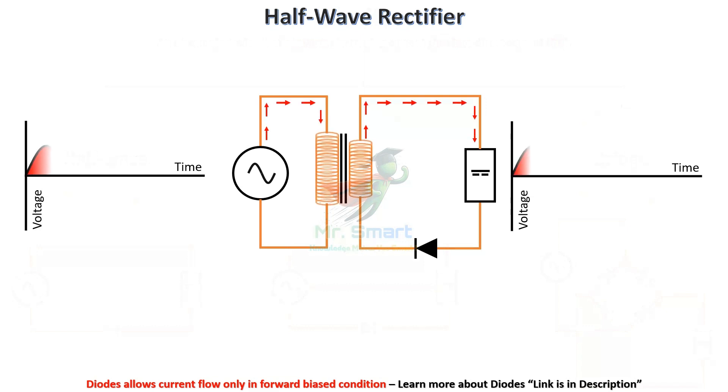A half-wave rectifier is made with a single diode, allows only one half of the AC wave to pass through, blocking the other half. It's simple and cost-effective but not very efficient for converting power.